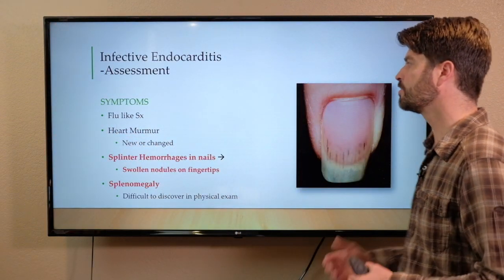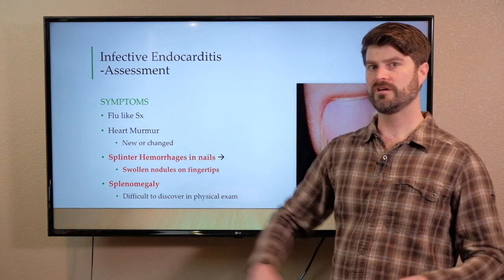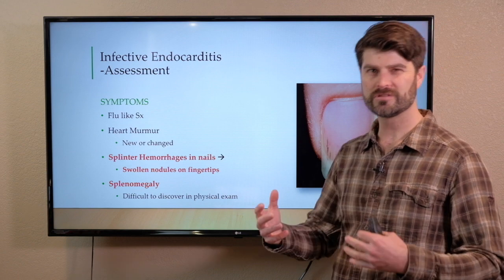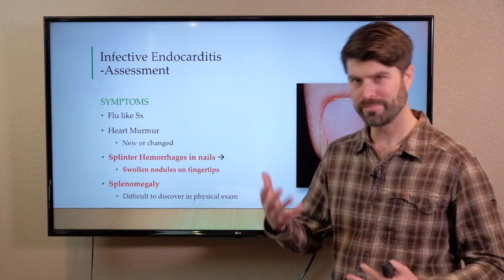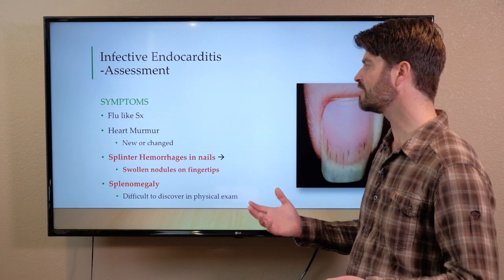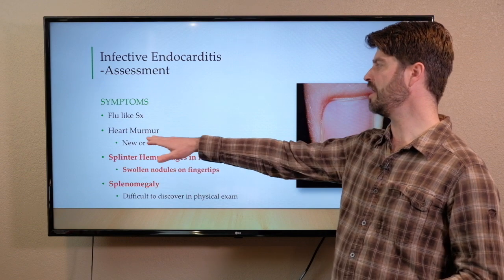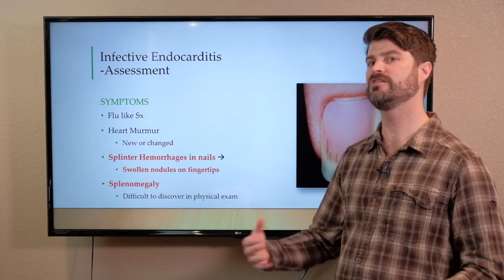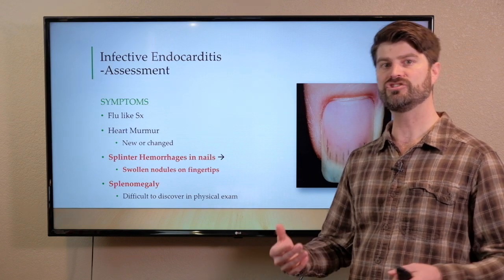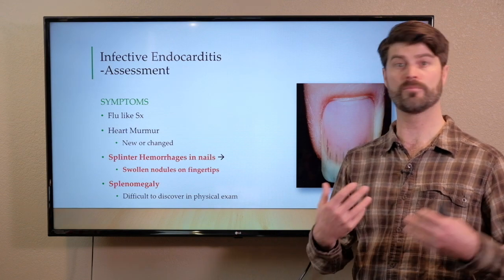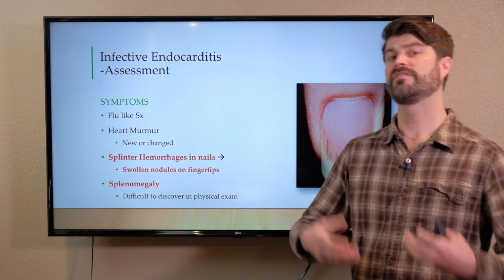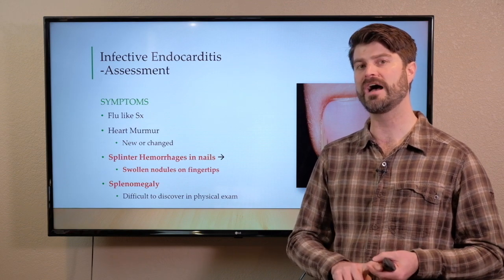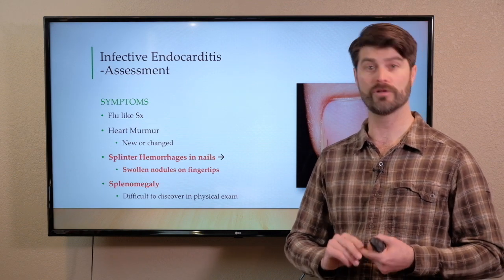For assessment, infective endocarditis primarily causes flu-like symptoms: shortness of breath, malaise, plus or minus fever. Patients may have a heart murmur — either a new one or a changed heart murmur. If they had a congenital heart murmur somewhere else in their heart, this will develop a new murmur around whichever valve has the bacterial overgrowth.